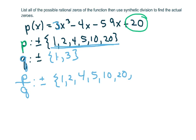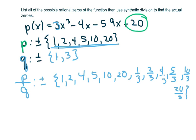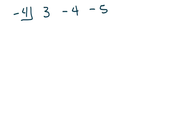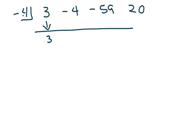I put this in my calculator and notice it crosses at negative 4, so I'll use synthetic division with negative 4. I bring down my 3, multiply to get negative 12, add; multiply to get 64, add to get 5; multiply to get negative 20, add to get zero. So negative 4 is confirmed as a zero.